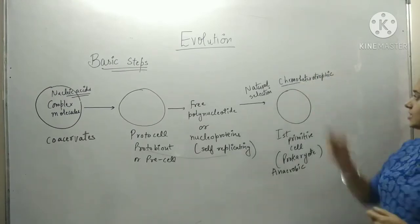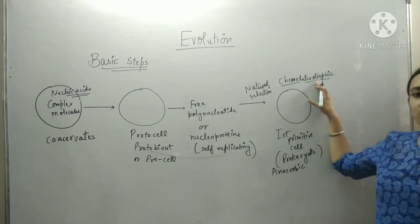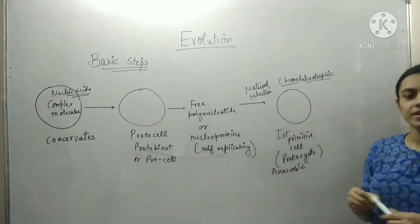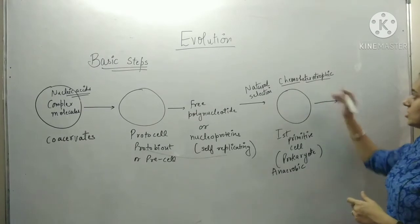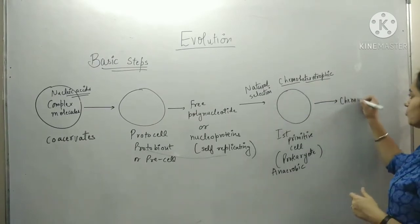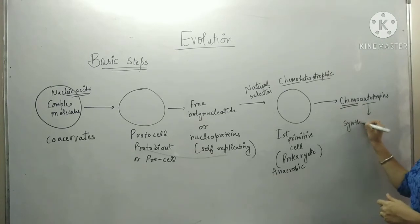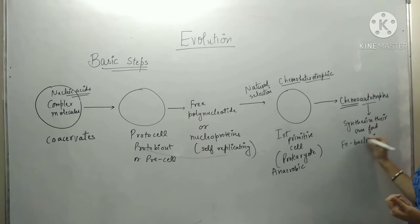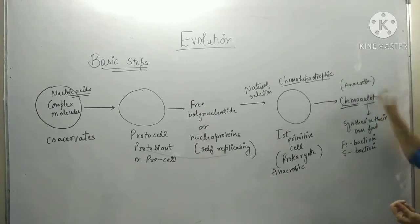Chemo means it uses chemicals, and heterotrophic means it was dependent on the environment for food — it was not able to create its own food. Organic molecules present in the environment were absorbed for nutrition and survival. The cell could divide by budding. Next in evolution, chemoheterotrophs evolved into chemoautotrophs. Chemoautotrophs use chemicals but can synthesize their own food. Examples are iron bacteria and sulfur bacteria. They were still anaerobic, growing in the absence of oxygen.